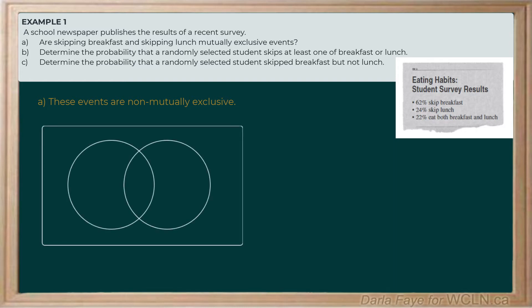Let's set up a Venn diagram to help us organize all of this information. We'll label B as the favorable outcomes for the event of skipping breakfast, and L to represent the favorable outcomes of skipping lunch. The probability of skipping breakfast is 62%, so we place 62 in the B region. The probability of skipping lunch was 24%, so 24 goes in the L region.